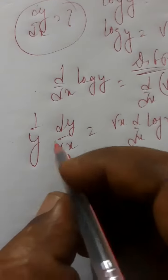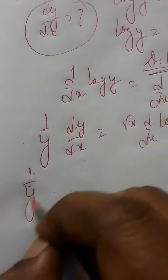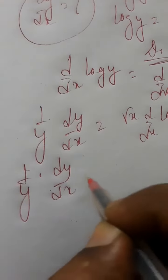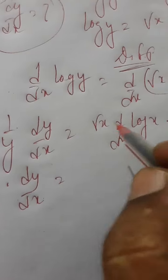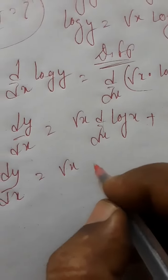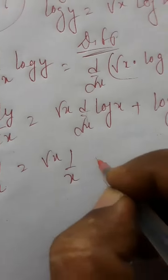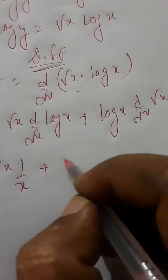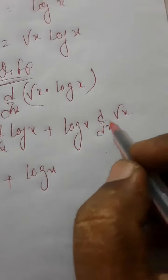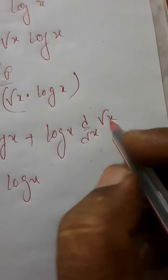So 1 by y into dy by dx equals root x times d by dx of log x plus log x times d by dx of root x. Now d by dx of log x is 1 by x.